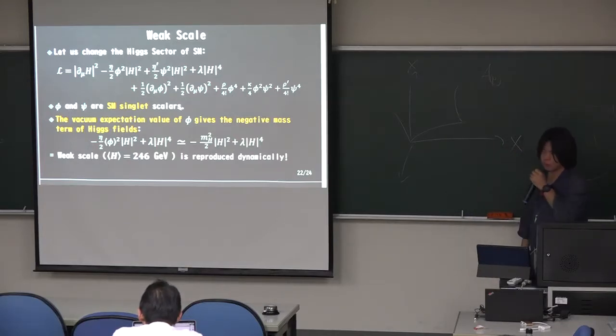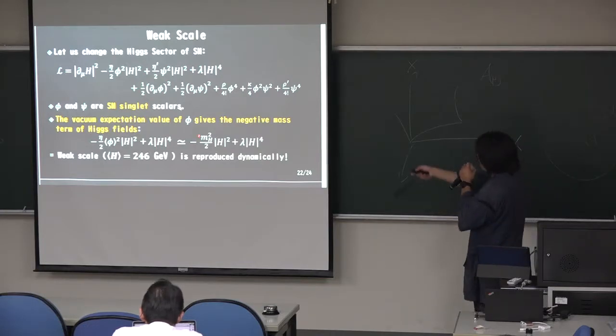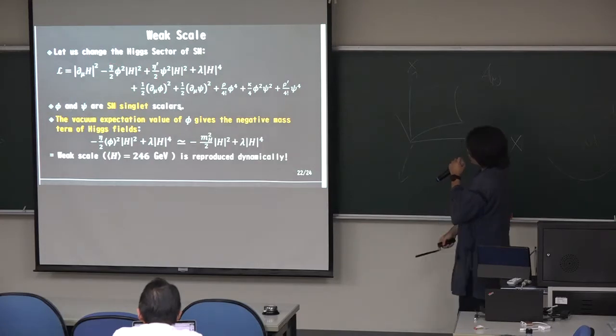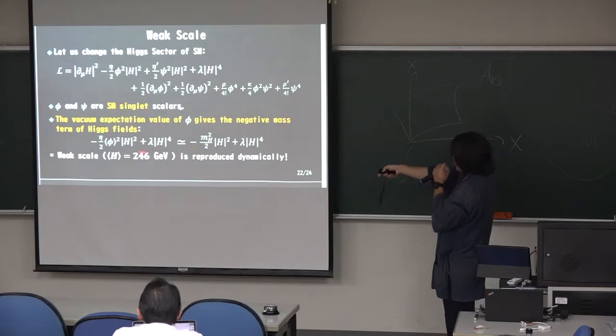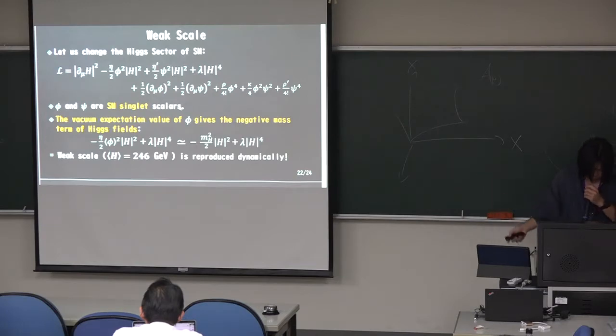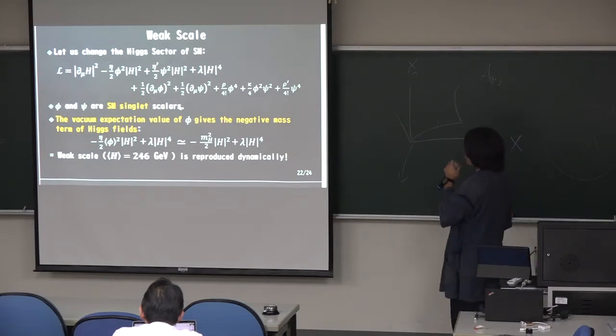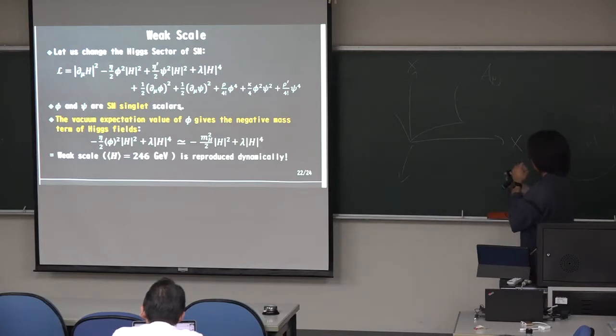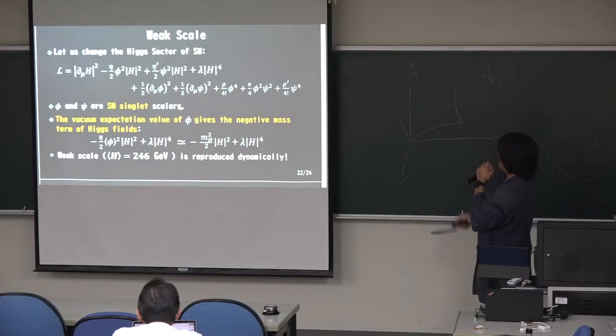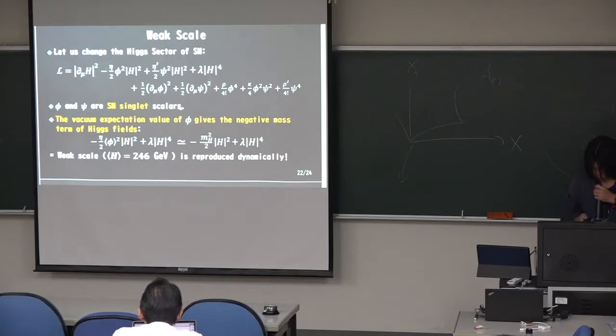And here, we introduce the phi and the psi are the same standard model of singlet. Singletous colors. As we studied in the previous sections, the vacuum and expectation values of phi. And phi have variable expression values. So this star gives the negative master of Higgs field. So this becomes like this. So then the weak scale is reproduced dynamically. So we don't have, we don't need to find you know this. Introduce the Higgs master. Okay.